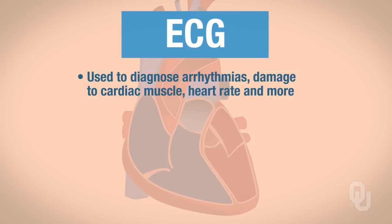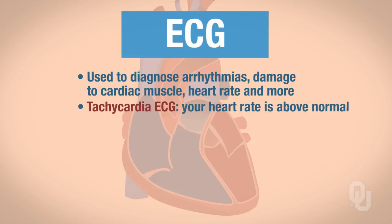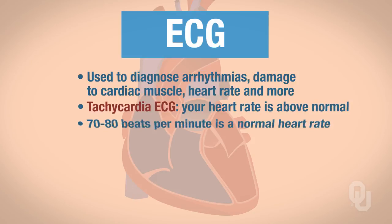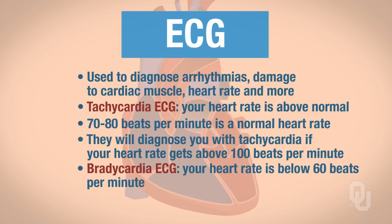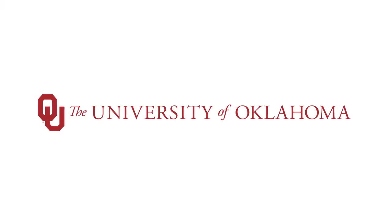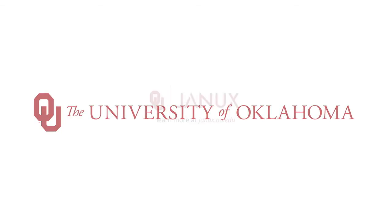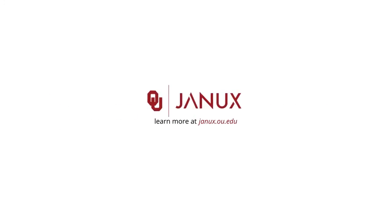You need to know that tachycardia means your heart rate is above normal. Normal heart rate is 70 to 80 beats per minute. You will be diagnosed with tachycardia if your heart rate gets above 100 beats per minute. If you have bradycardia, that means your heart rate is below 60 beats per minute.